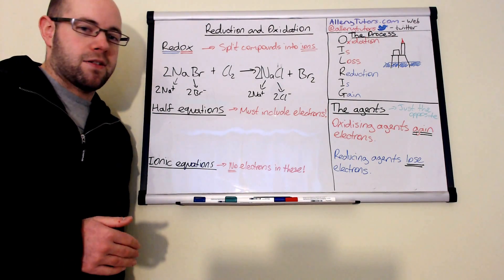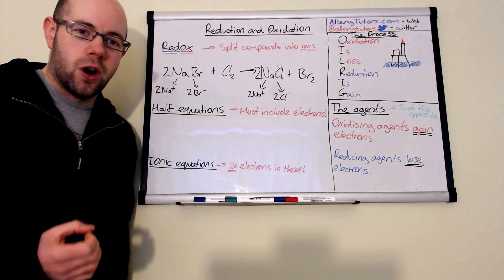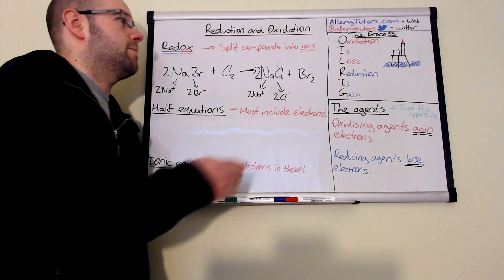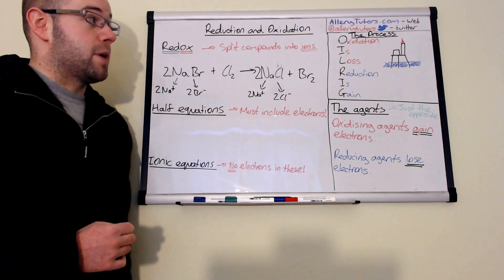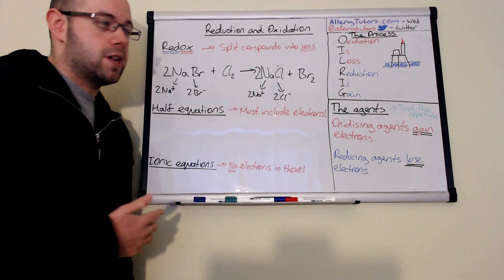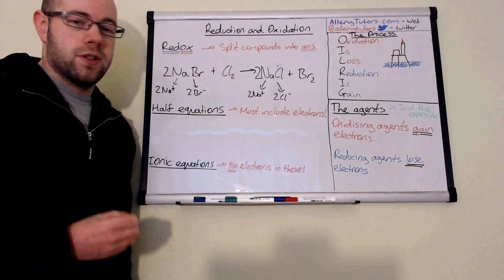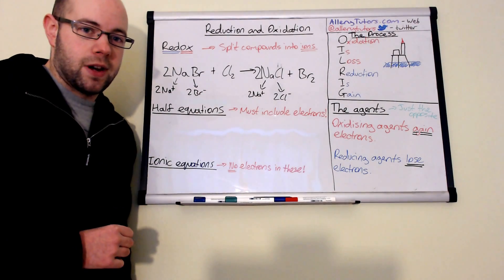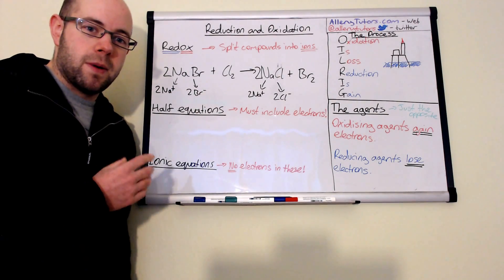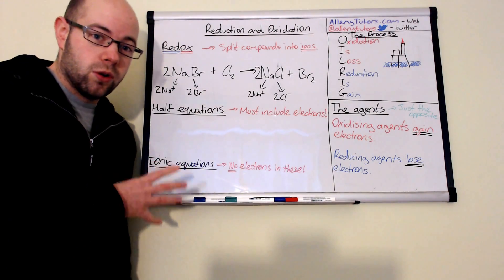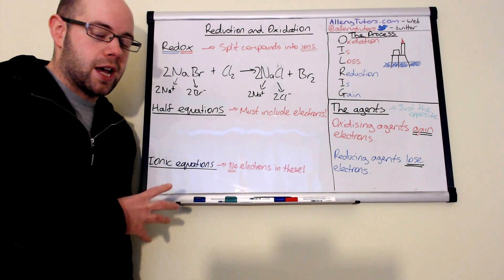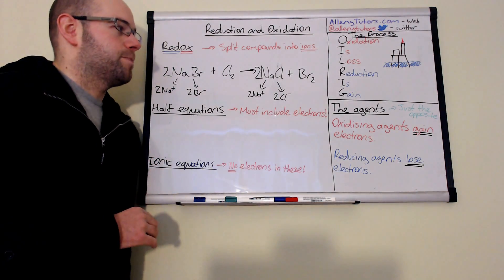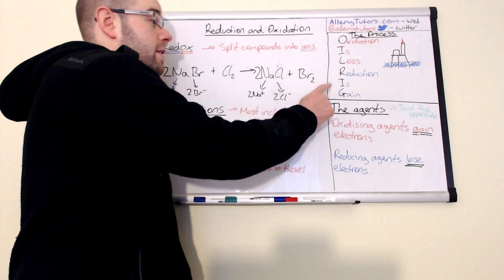I'm going to start with the acronym OILRIG, which you might have heard of before. OILRIG helps you remember what oxidation and reduction is. Oxidation is the loss of electrons and reduction is the gain of electrons. Remember, oxidation and reduction is all to do with electrons - that's what you've got to have in your head when you think of reduction and oxidation.